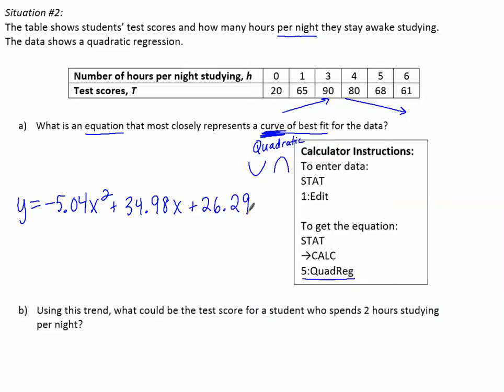Part b, using this trend, which is this equation, what could be the test score for a student who spends two hours studying per night? So remember, the number of hours studying per night was the x, so x is two. And we're looking for the test score. The test score is the y. What is the y?